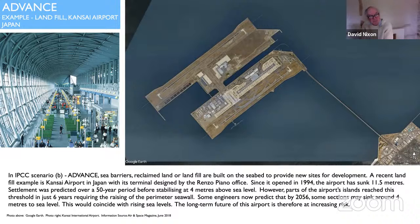Since the airport has opened in 1994, the ground level has sunk 11.5 meters through settlement. This settlement was predicted over a 50-year period before stabilizing at four meters above sea level. So they knew that this would happen. However, parts of the airport's islands have reached this threshold in just six years, requiring the raising of the perimeter sea wall which runs around the edge. Some engineers now predict that by 2056, some sections may sink around four meters to sea level. This would coincide with rising sea levels, which doesn't take into account rising sea levels.